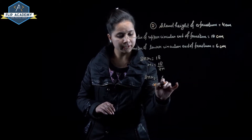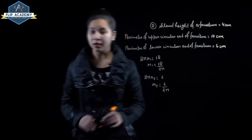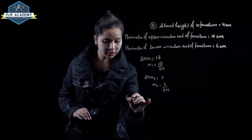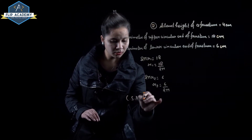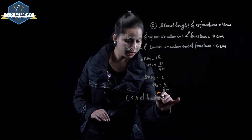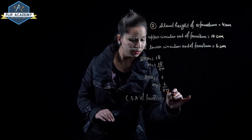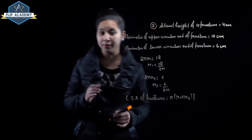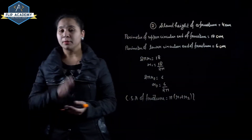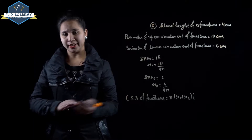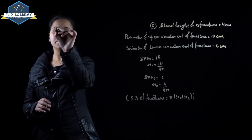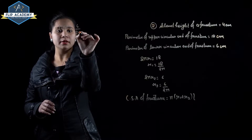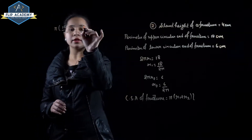So r2 is equal to 6 upon 2 pi. Now curved surface area of frustum equals pi into r1 plus r2 into slant height l. Substitute the value of r1, r2, and l: pi into 18 upon 2 pi plus 6 upon 2 pi into slant height equal to 4.